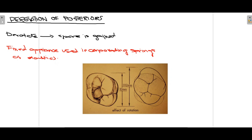In this video, we talked about different space gaining methods: proximal stripping, expansion, extraction, distalization of molars, uprighting of tilted molars, and derotation of posteriors. These are the basic methods used to gain space when there is space discrepancy. I hope this video was useful — please like, share, subscribe, and press the bell icon. Thank you for watching.